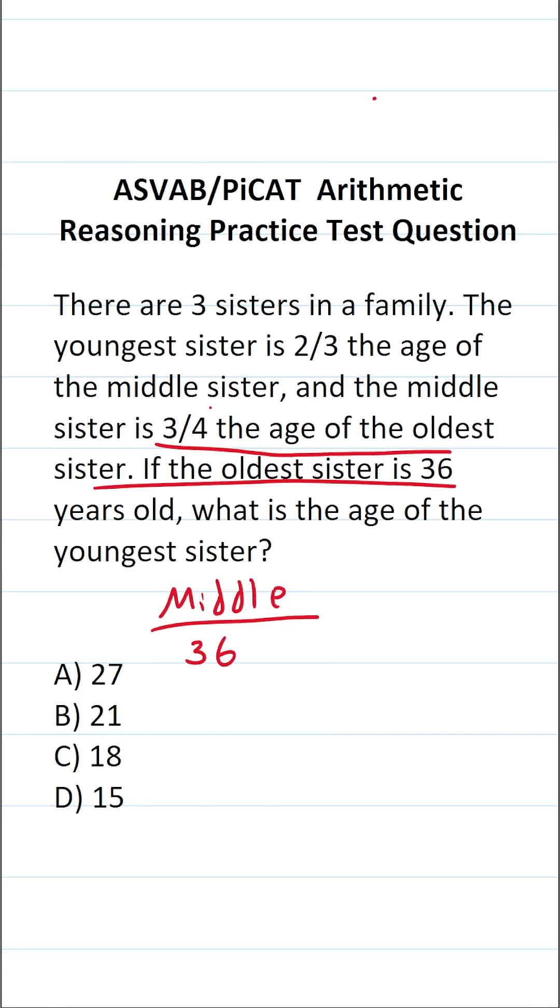The oldest sister is 36 years old, so we're going to find out what three-fourths of 36 is. To make this math easier to do, I'm going to write 36 as a fraction by placing it over 1. In doing so, this enables me to cross-reduce. More specifically, I can say 4 goes into 4 one time, 4 goes into 36 nine times.